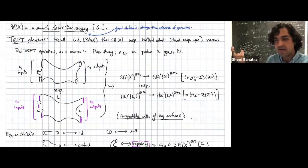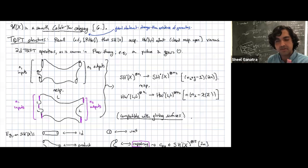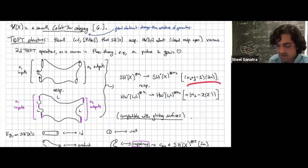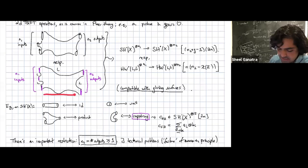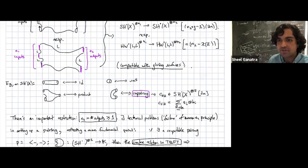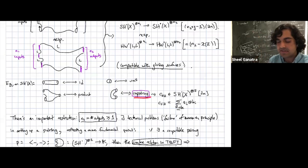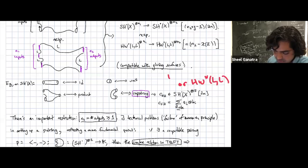Symplectic homology and wrapped Floer homology of LL admit various 2D TFT operations by counting solutions to maps from surfaces with many inputs and many outputs. If I have a surface with n₁ inputs and n₂ outputs, I get an operation from my group tensor n₁ to my group tensor n₂. The most notable operations: a cylinder contributes to identity, a pair of pants gives a product, the cap gives a unit, and a 'macaroni' with two outputs gives a co-pairing — an element of symplectic homology tensor 2.